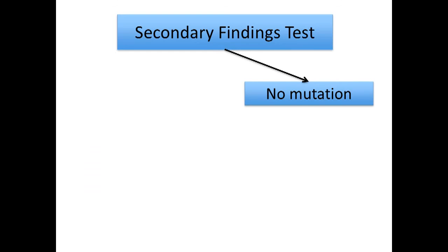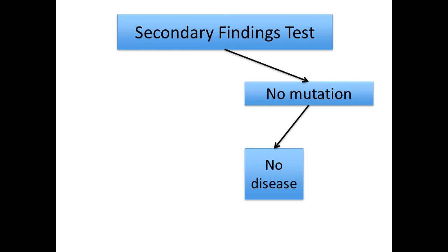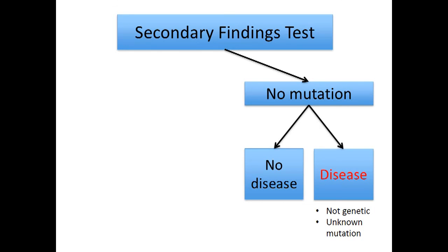We also might not find any mutation. If you are found to be negative for any genetic mutation in these genes, you are less likely to develop a disease caused by one of these 57 genes specifically. However, most people who develop the health problems we discussed, including cancer and heart disease, develop the problems for other reasons besides mutations in these genes. Therefore, if we do not report a genetic mutation, it does not guarantee that you will not develop these diseases. You still need to watch what you eat, exercise, and follow your doctor's advice about screening for cancer and heart disease.